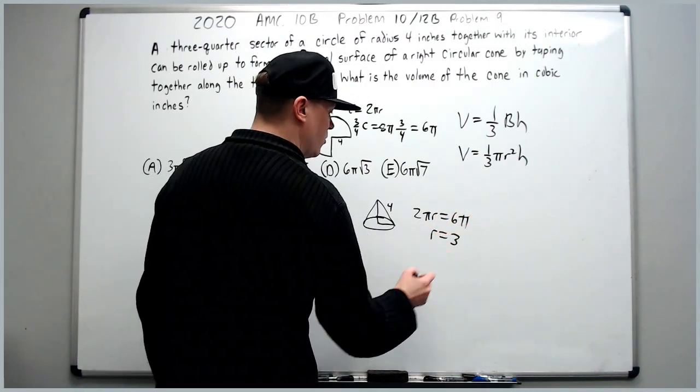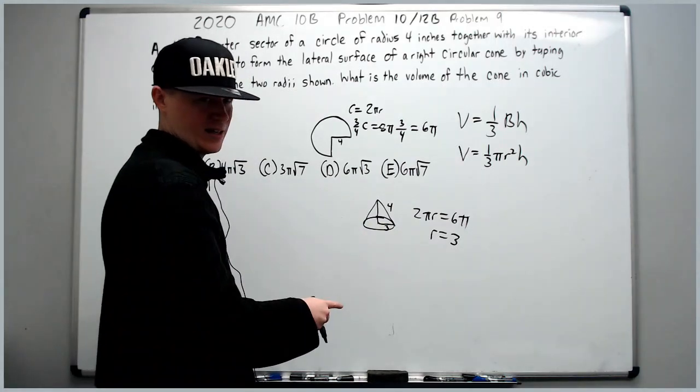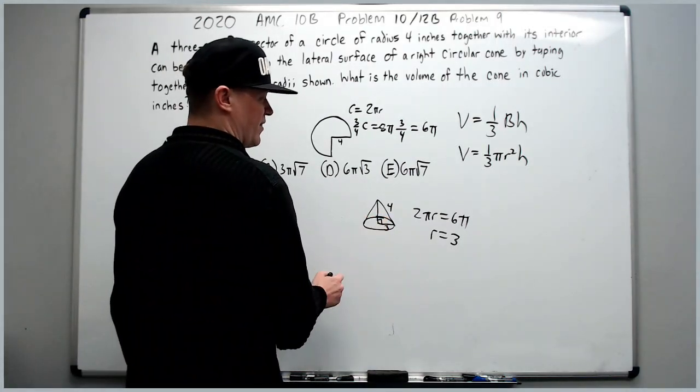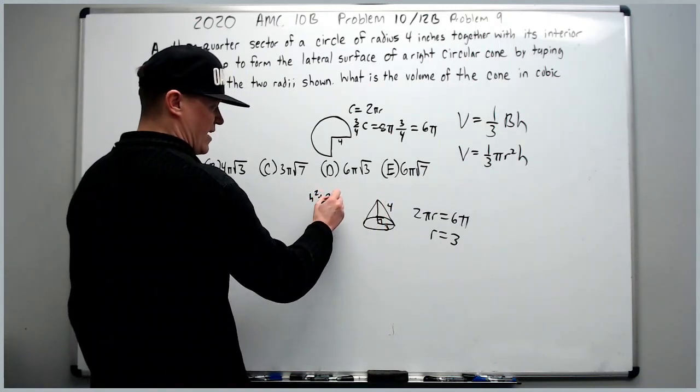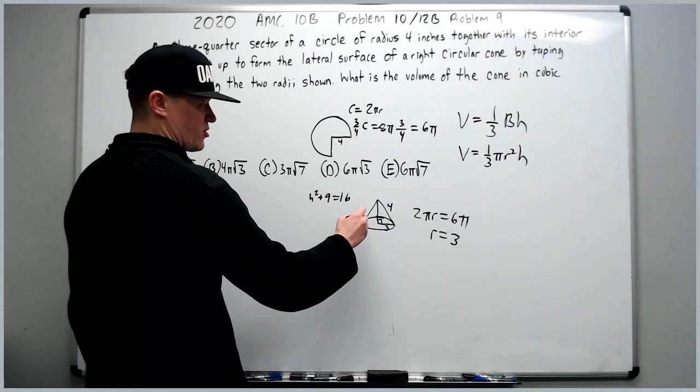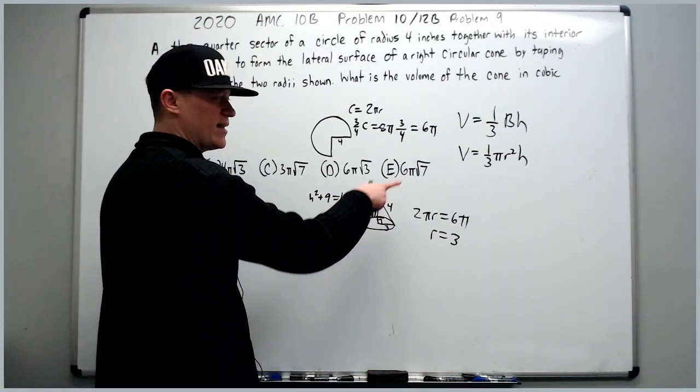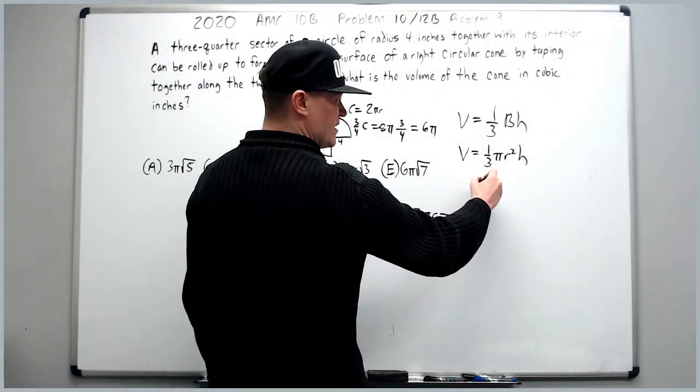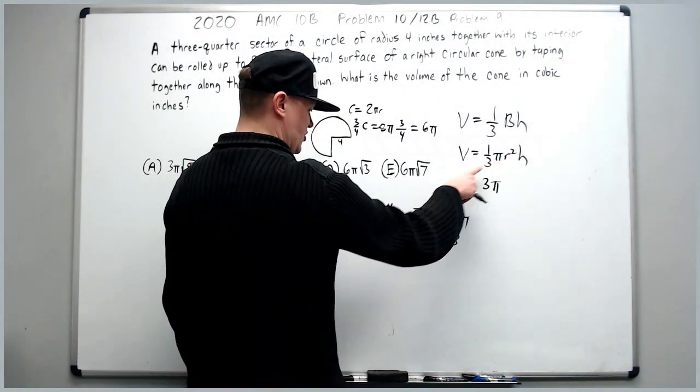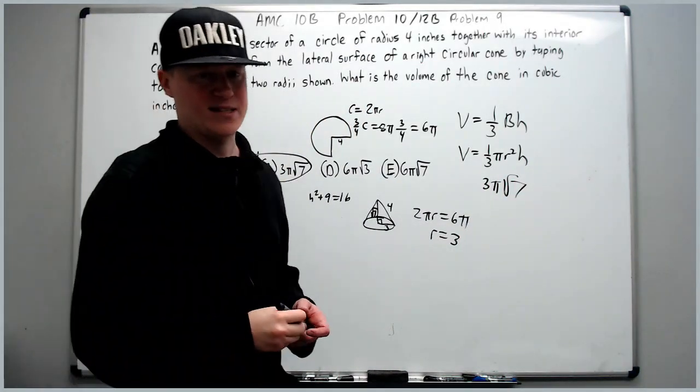R will equal three. Now that we know this is three, don't assume this is five. You're going to have to do Pythagorean. So it's going to be the height squared plus nine equals 16. Subtract and square root to get root seven. Great. We've got all the things we need. We plug in and we're done. Nine over three is three pi. H is root seven. It's three pi root seven. And that is answer choice C.